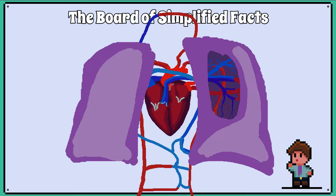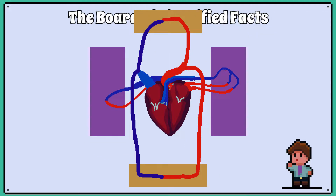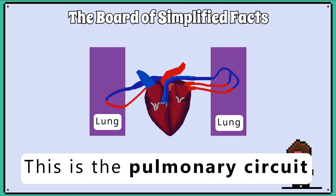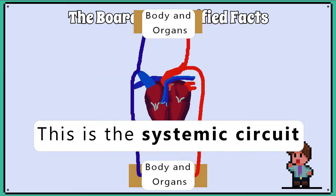The double circulatory system refers to two systems. One system is for the lungs, where red blood cells need to perform gas exchange with the inhaled atmosphere. The biological term for this circuit is the pulmonary circuit. The second system is for the organs and the body, where oxygenated blood is delivered to the cells and organs and deoxygenated blood is returned to the heart. The biological term for this system is the systemic circuit.